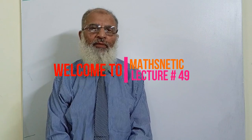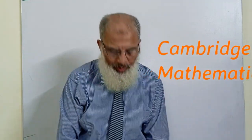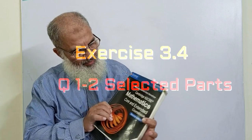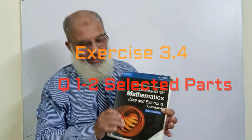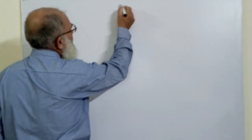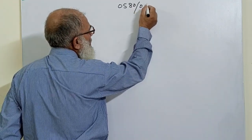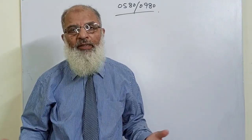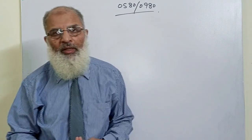Bismillahirrahmanirrahim, Assalamualaikum viewers and my dear students. Good morning. As you know, we are going to this book — Cambridge IGCSE Mathematics Core and Extended Course Book, 2nd Edition, written by Caris Poisson and Dick Hankshoff. It is a very comprehensive book. The course codes are 0580 and 0980. We will be doing Exercise 3.4 today and maybe we will complete it today.